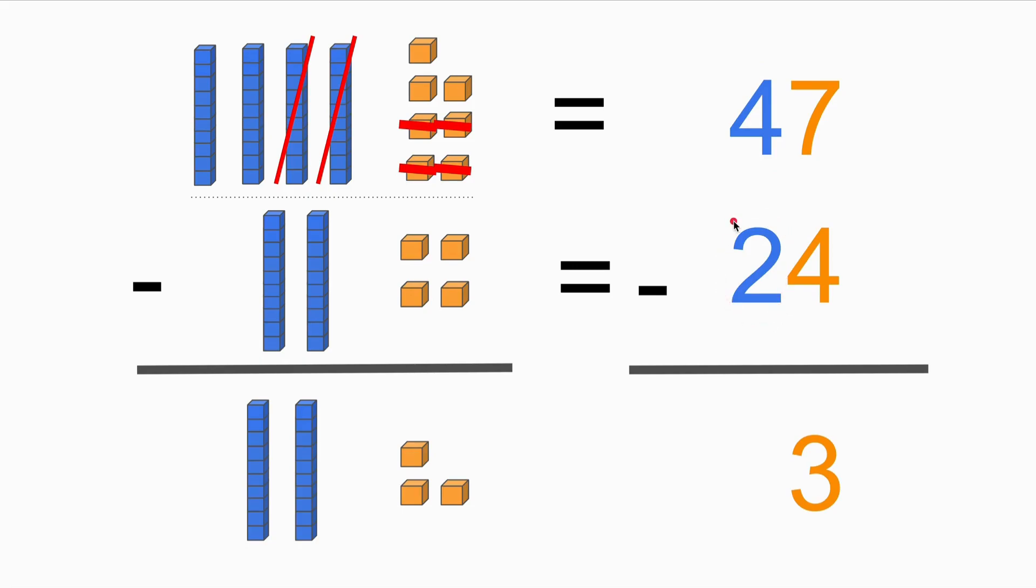And now at the tens place, we have four minus two, and we get the result as two. So now we have the final result of 47 minus 24, which is 23.